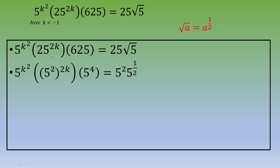We can modify. Instead of 25, we can write 5². Instead of 625, this is 5^4. Instead of 25, this is 5².